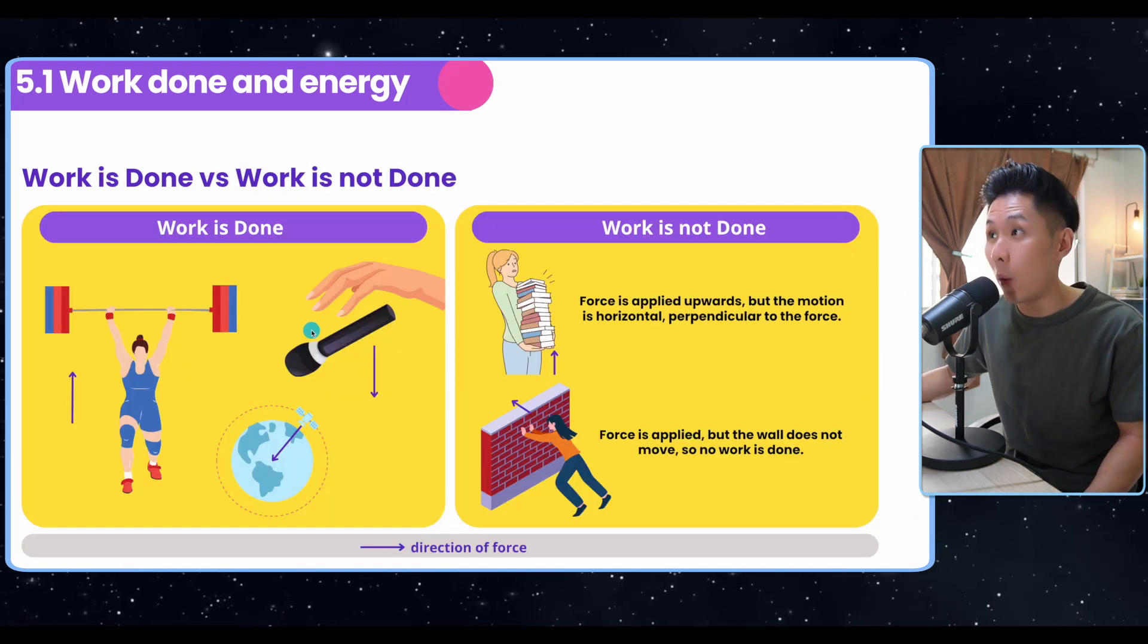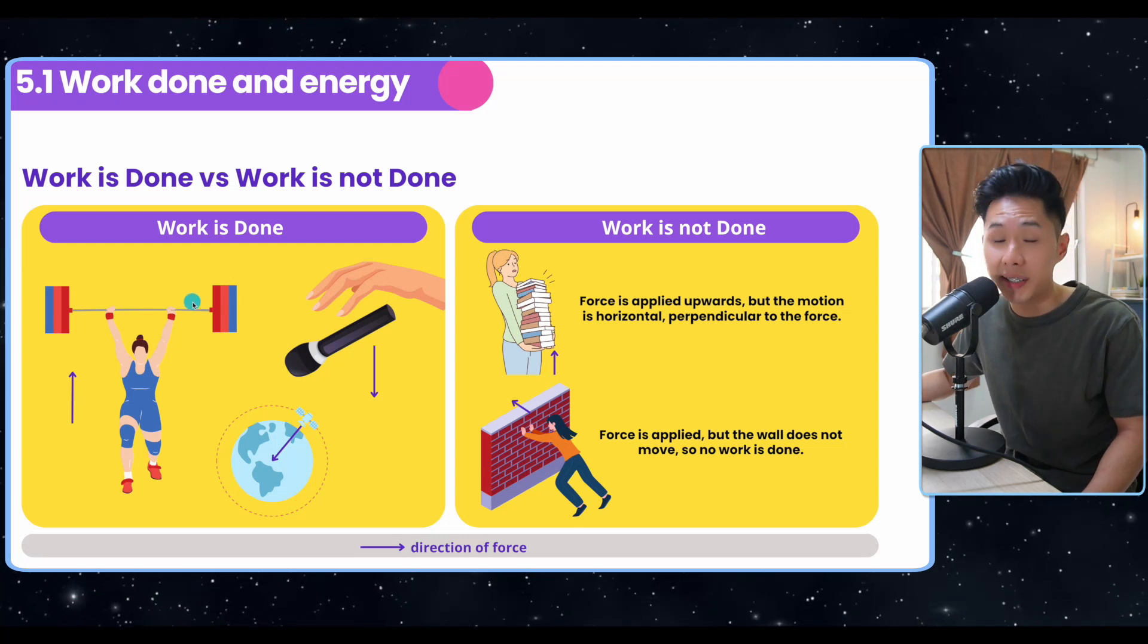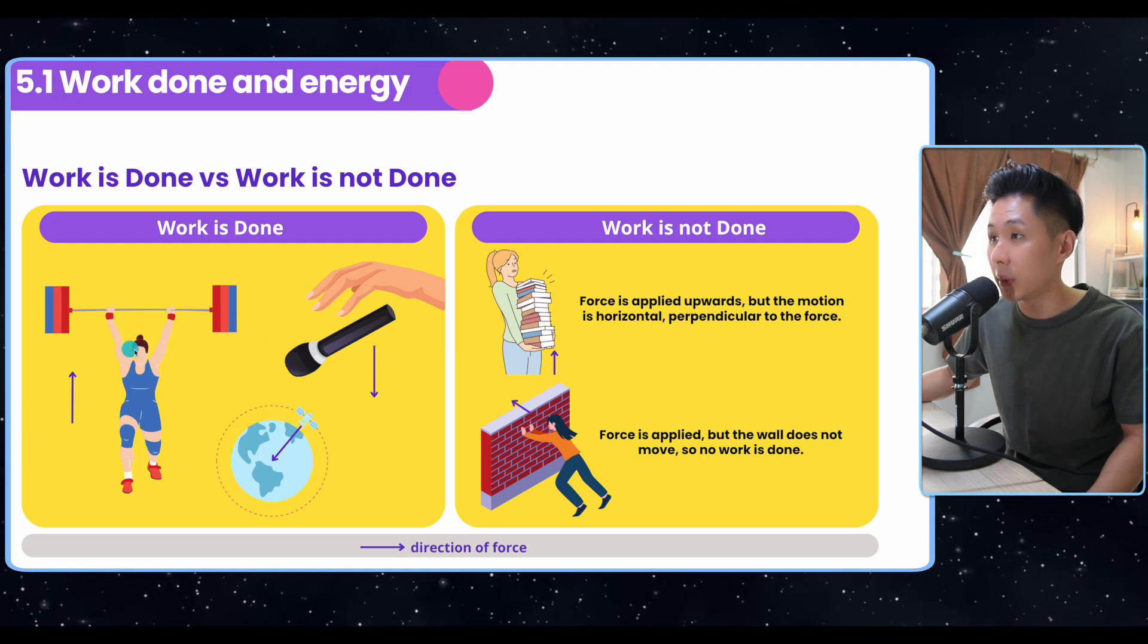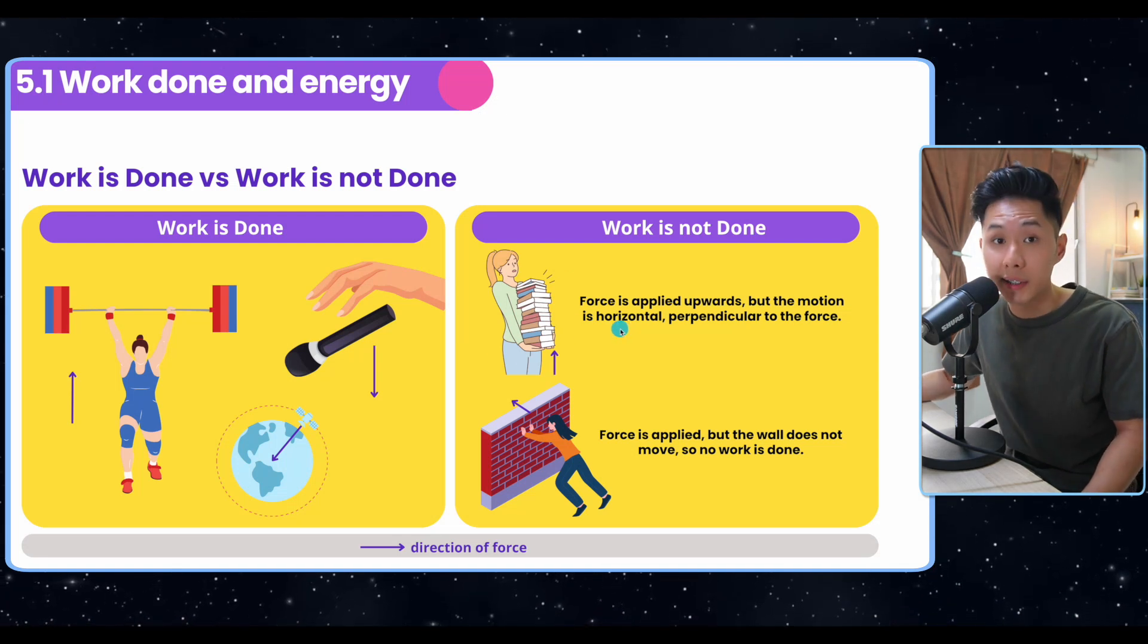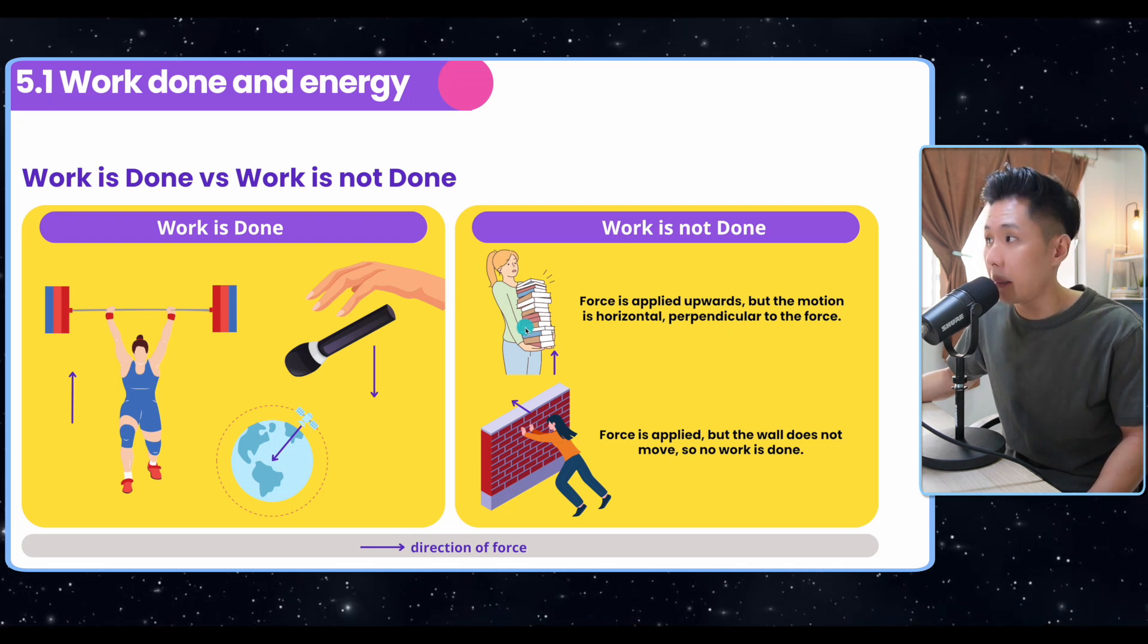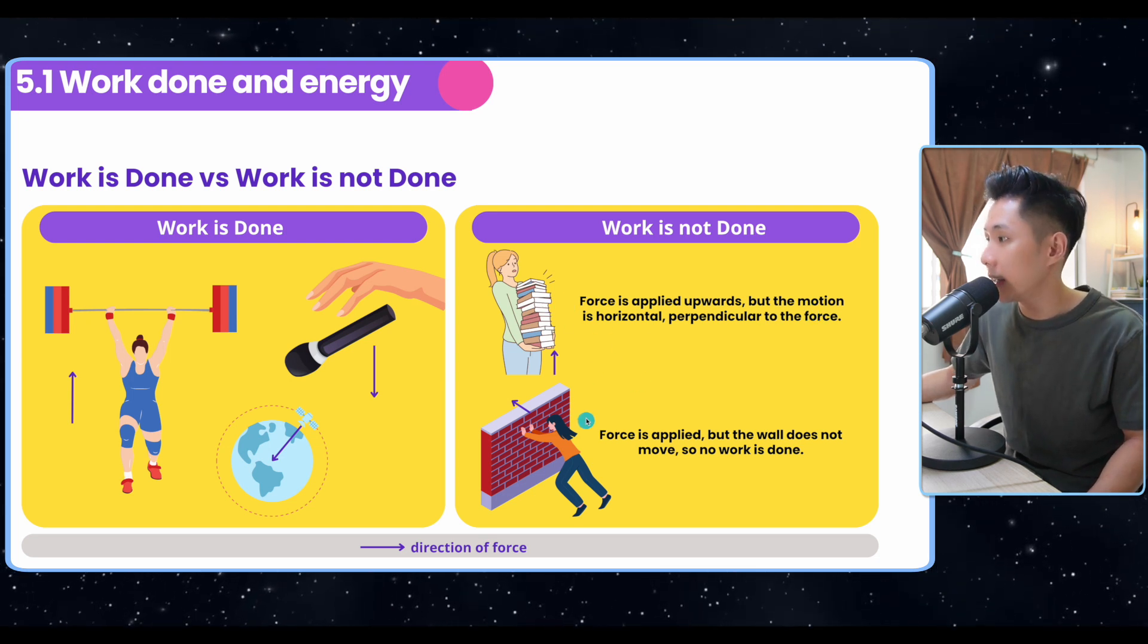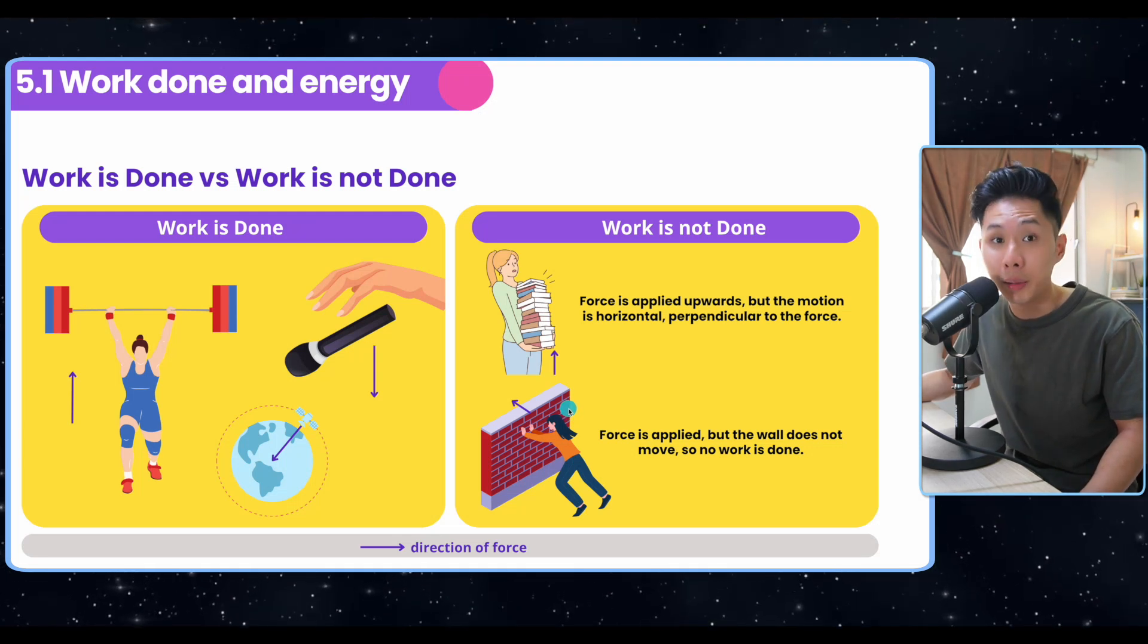Here we have some examples on when work is done and when work is not done. So you can see that these are the scenarios where work is done because the object moves in the direction of the force. In this case, it would be gravity, and this will be the force exerted by the lifter. So here we have some scenarios which work is not done. This lady is carrying a bunch of books with an upward force, but she's moving horizontally. So in this case, work is not done. Similarly, when you are pushing against the wall, if the wall doesn't move, then you're not doing any work as well.